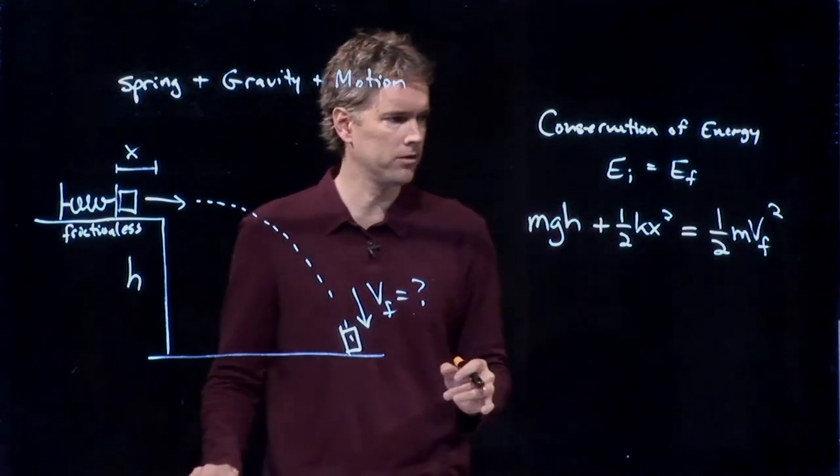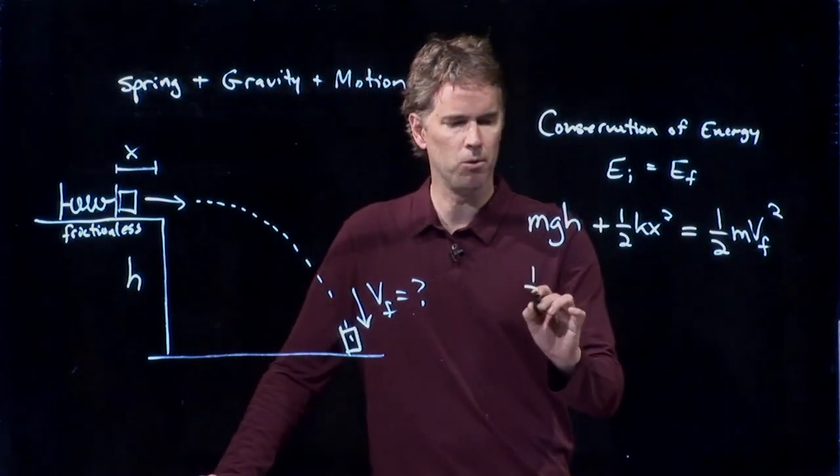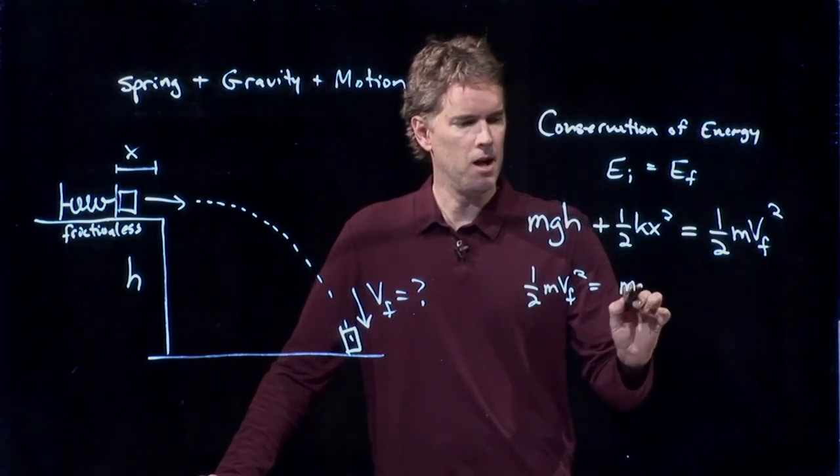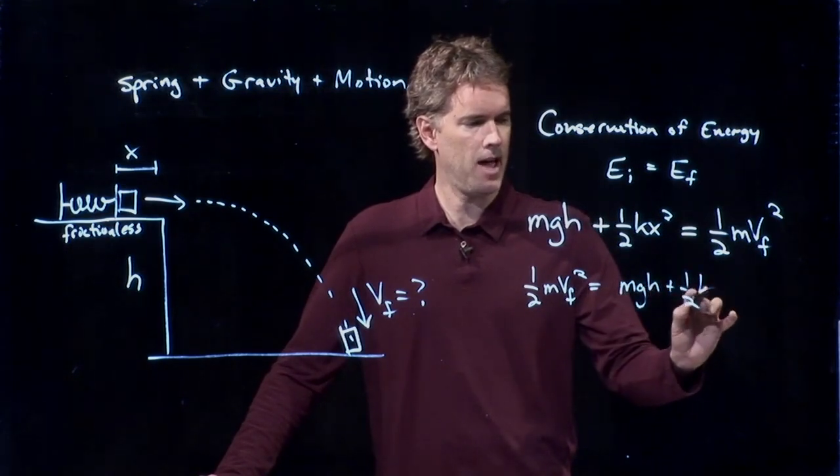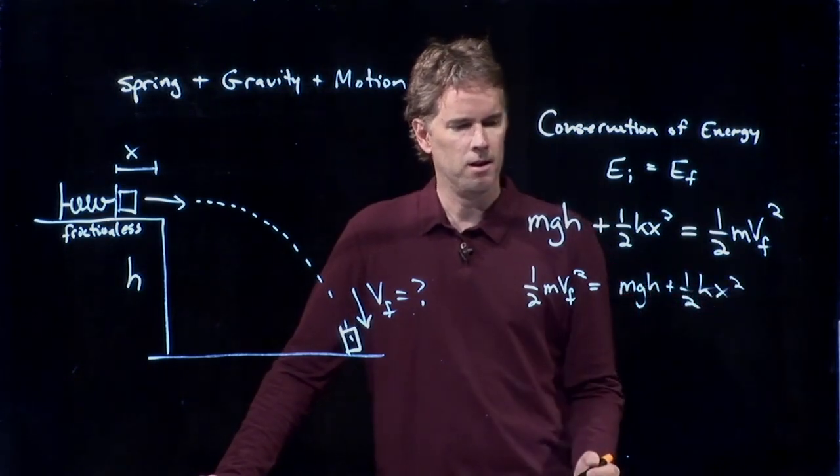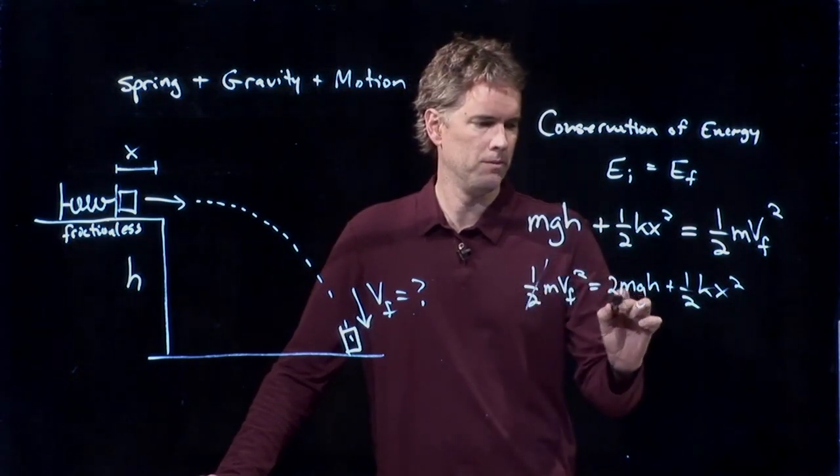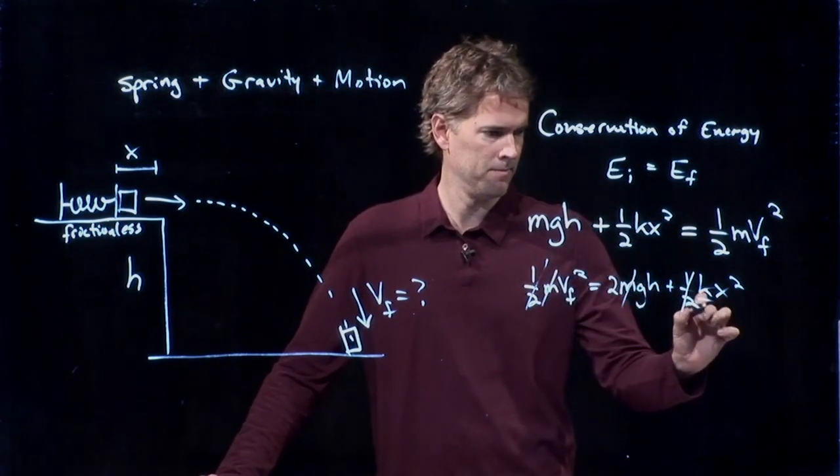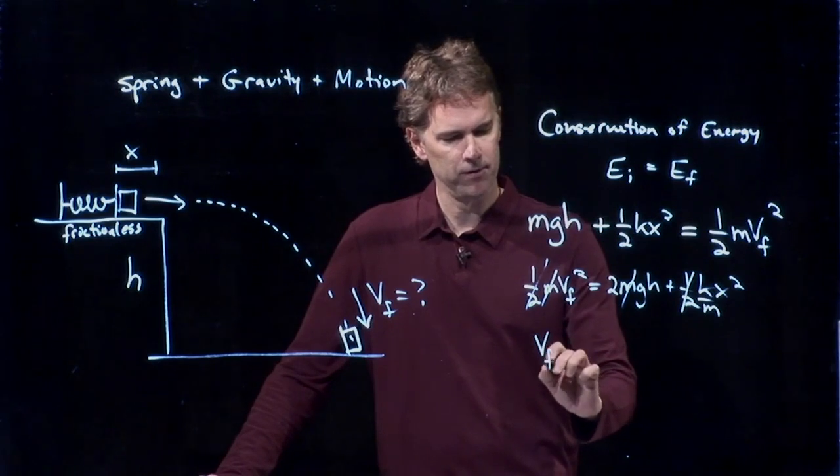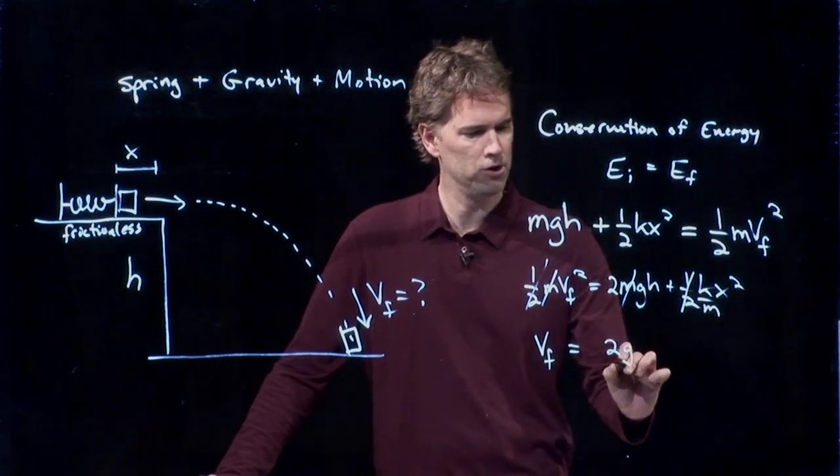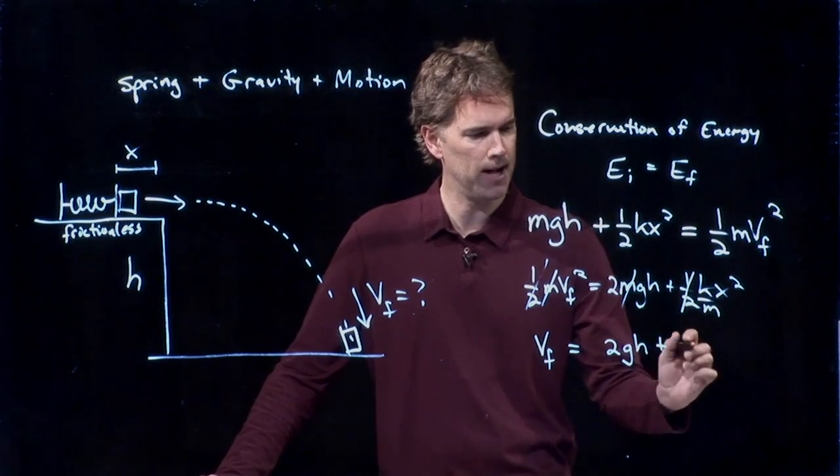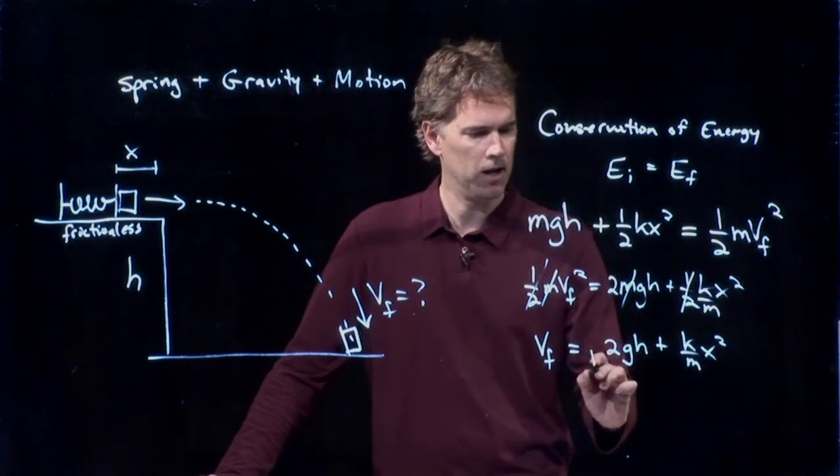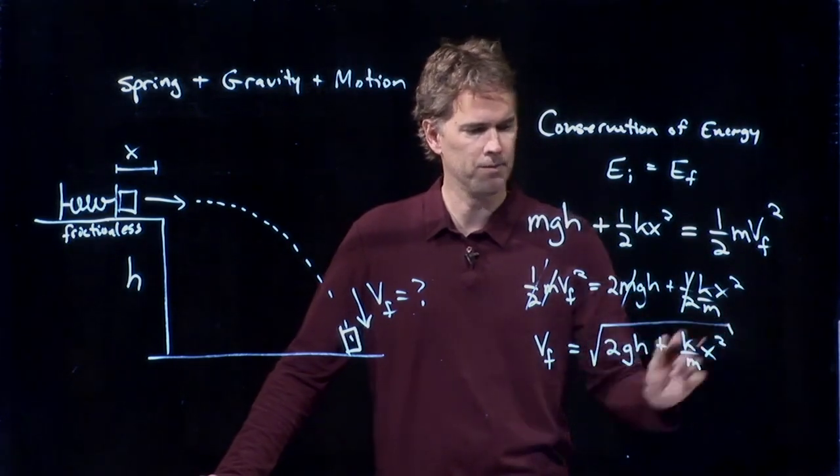And now we can solve this for VF. Let's rewrite it. So I get 1/2 m VF squared equals mgh plus 1/2 kx squared. I can multiply everything by 2. I can divide by m. And I get VF is equal to 2gh plus k over m x squared. And then I take the square root of that whole thing.